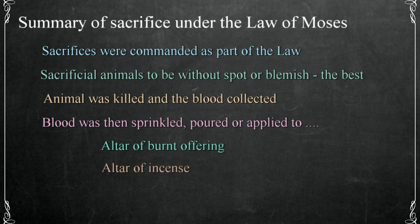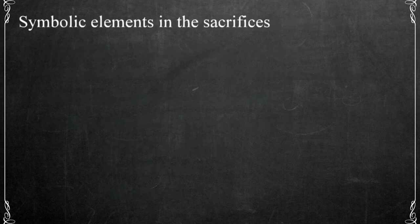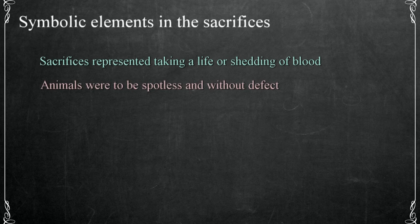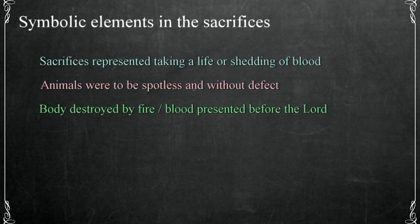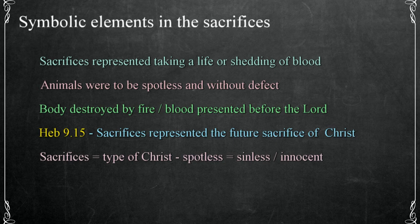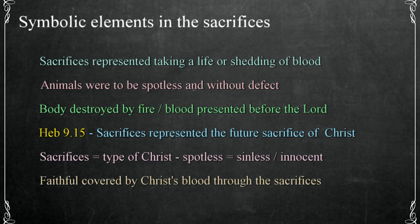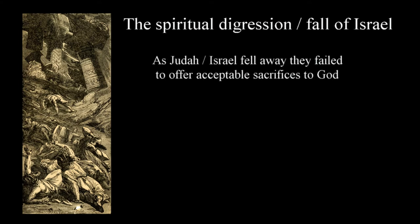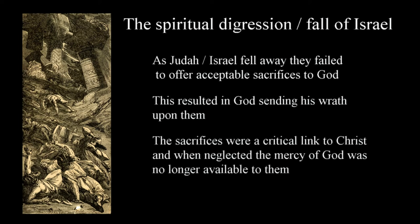The process can be summarized: sacrifices were commanded as part of the law; the sacrificial animals were to be without spot or blemish — the best; the animal was killed and the blood collected; blood was then sprinkled, poured, or applied to the altar of burnt offering, the altar of incense, and before the veil. Sacrifices represented the taking of a life or shedding of blood. The body was destroyed by fire but the blood was presented before the Lord. The sacrifices represented the future sacrifice of Christ as we learn in Hebrews 9:15.